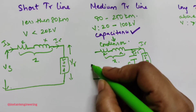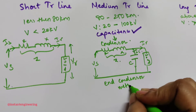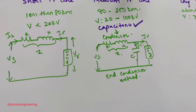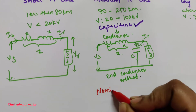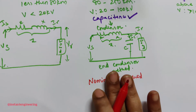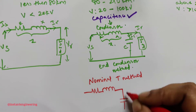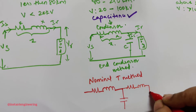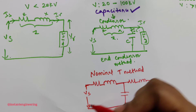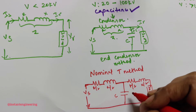The medium transmission line is also divided into two other types: nominal T method and nominal Pi method. In the nominal T method, the capacitor C is placed in the middle in the form of a T shape. The impedance is split as R/2 and X/2 on each side, with C in the center and voltage V1 taken across C.